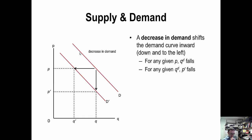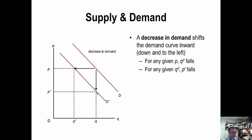A downward inward shift is a decrease in demand: horizontally, for a given price P, quantity demanded falls from Q to Q prime. Vertically, at a given quantity Q, whereas you used to be willing to pay at most P, now you're only willing to pay P prime — the maximum price you're willing to pay has declined. Two ways to interpret demand curves: horizontal and vertical.